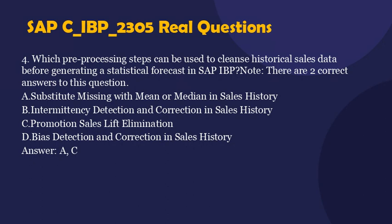Question 4. Which pre-processing steps can be used to cleanse historical sales data before generating a statistical forecast in SAP IBP? Note, there are two correct answers to this question. A. Substitute missing with mean or median in sales history. B. Intermittency detection and correction in sales history. C. Promotion sales lift elimination. D. Bias detection and correction in sales history. Answer: A, C.